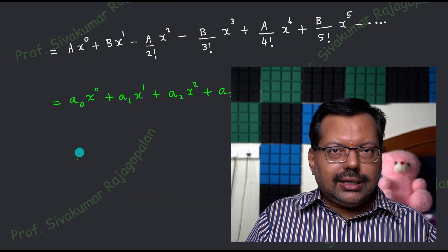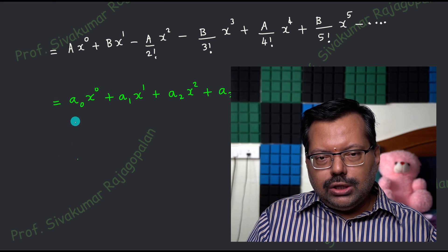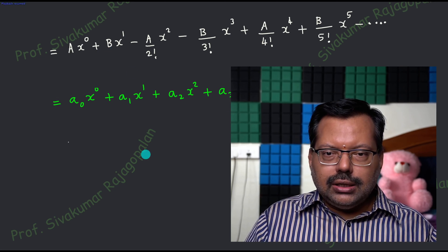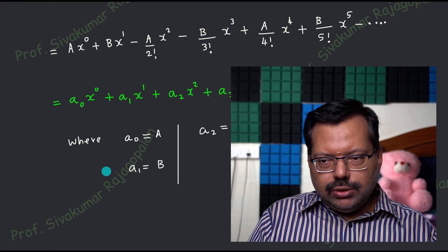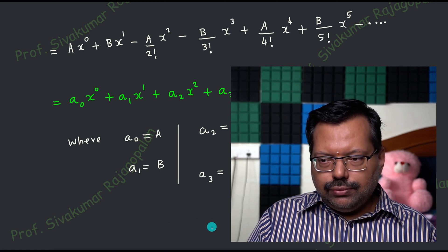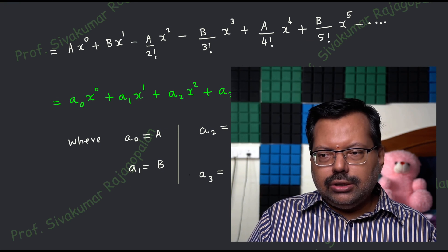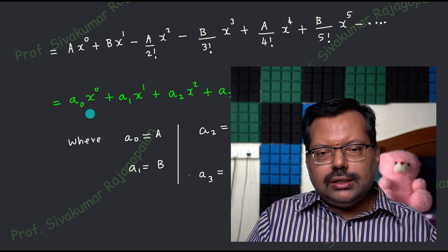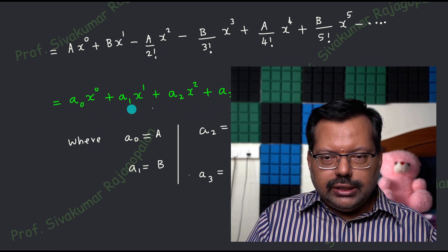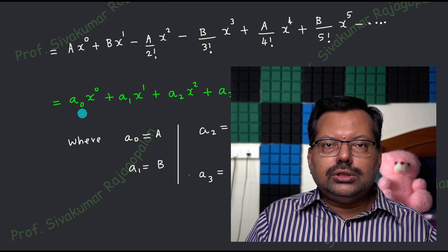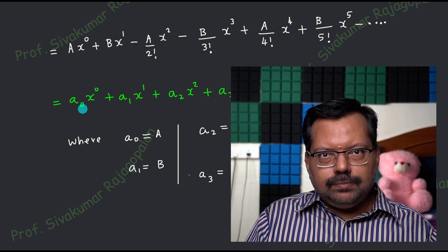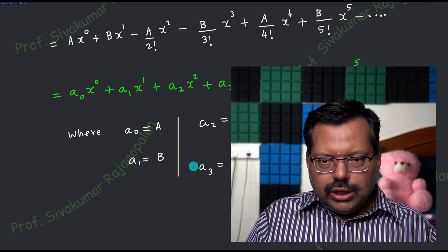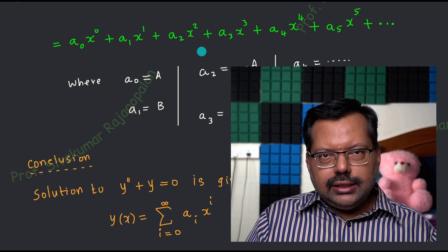We have not cut the series — no approximation whatsoever. The only thing is we must make sure that a₀ equals capital A, a₁ equals capital B, and so on, otherwise it would not be valid. We can write down what a₁, a₂, etc. are, and similarly the other constants a₄, a₅. The conclusion is that the final solution is going to look like the equation shown in green: the solution to y'' + y = 0 is given by the infinite power series written in green.